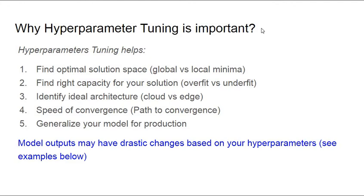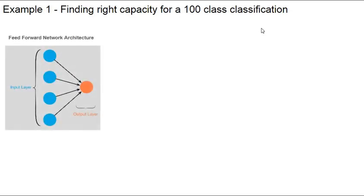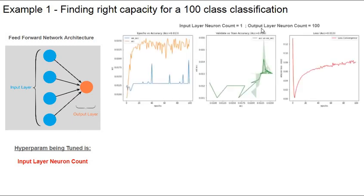To prove this point, we're going to see a couple of examples. First, let's understand how capacity can be changed by changing neurons for a neural network. Here is a simple architecture with one input layer and one output layer. For a 100-class classification problem, there will be 100 neurons in the output layer. I'm going to vary the number of input layer neurons, which is the hyperparameter being tuned.